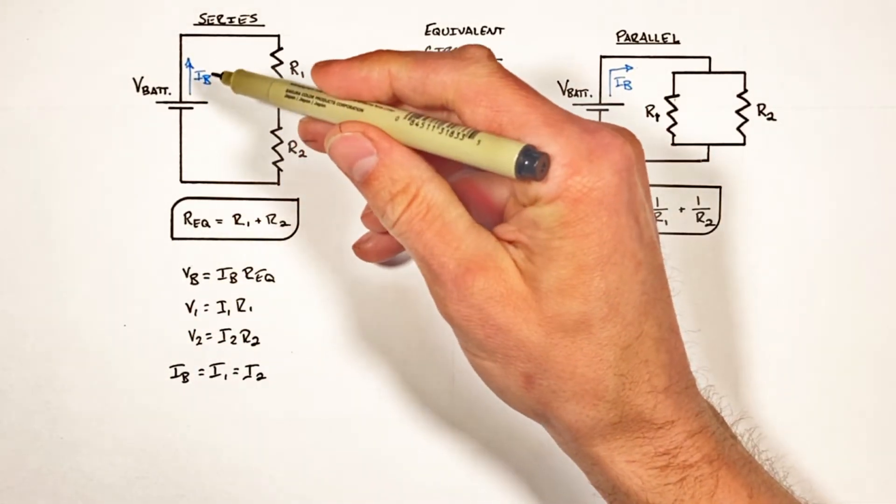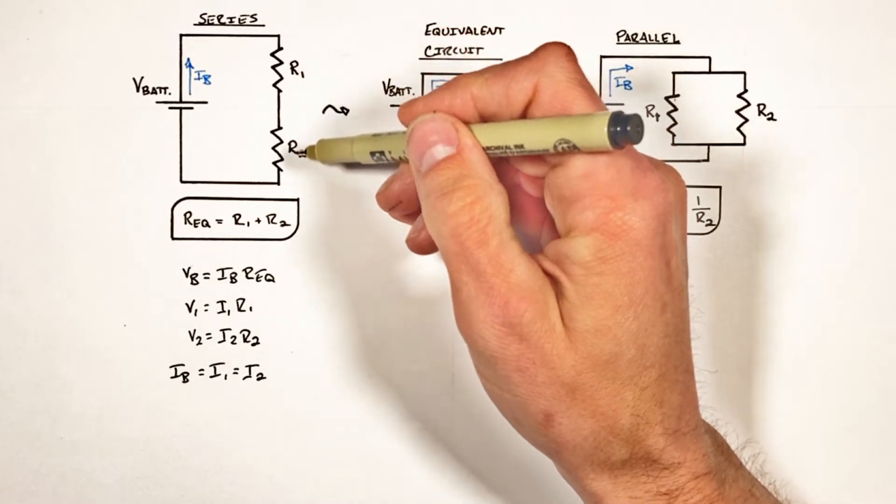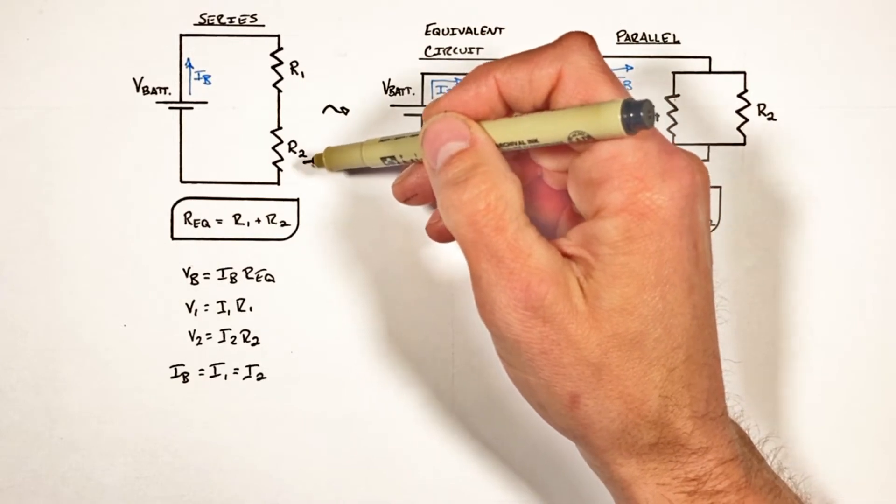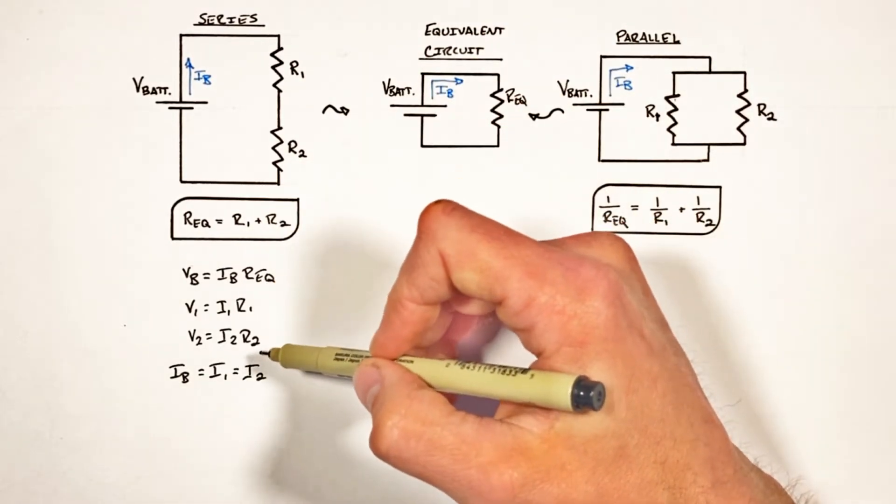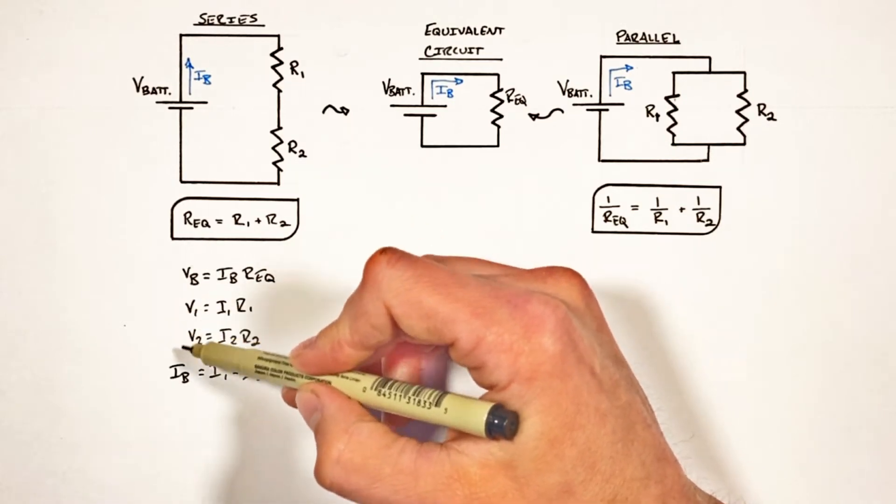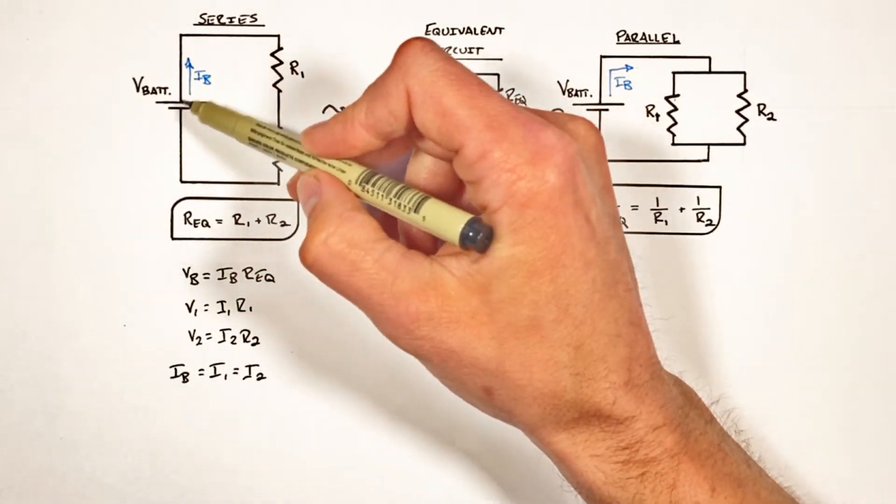And this is useful in something like a light bulb hooked up to a dimmer switch. The resistance of the dimmer switch controls the current that makes it to the bulb. But going back to what I mentioned earlier, Ohm's law applies to each individual component, but the voltages across the components are not the same as the voltage across the battery.